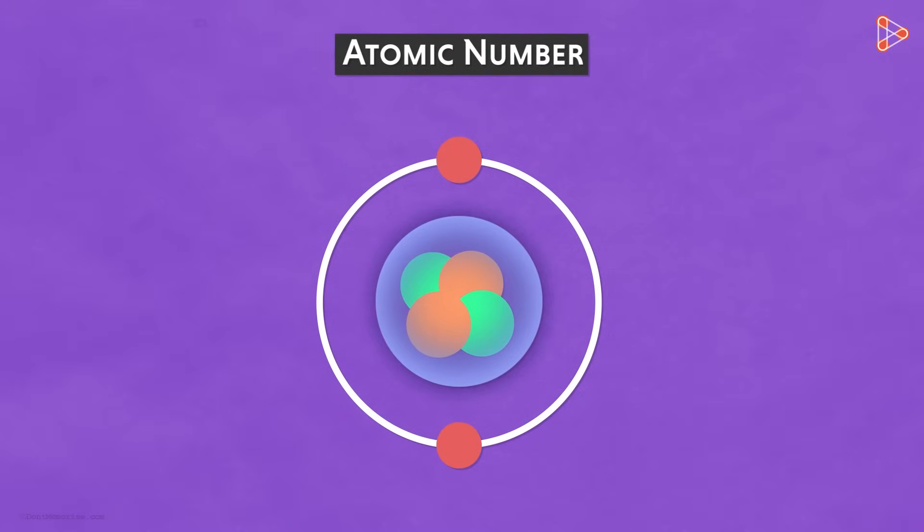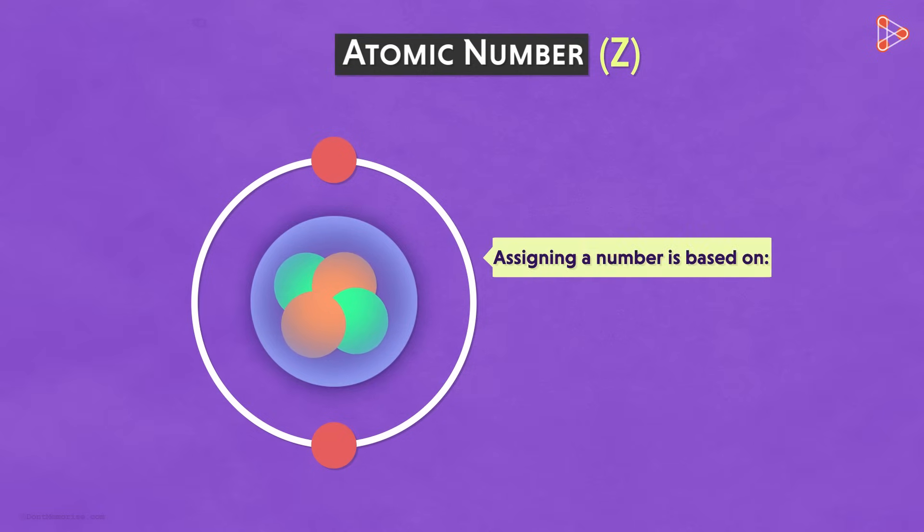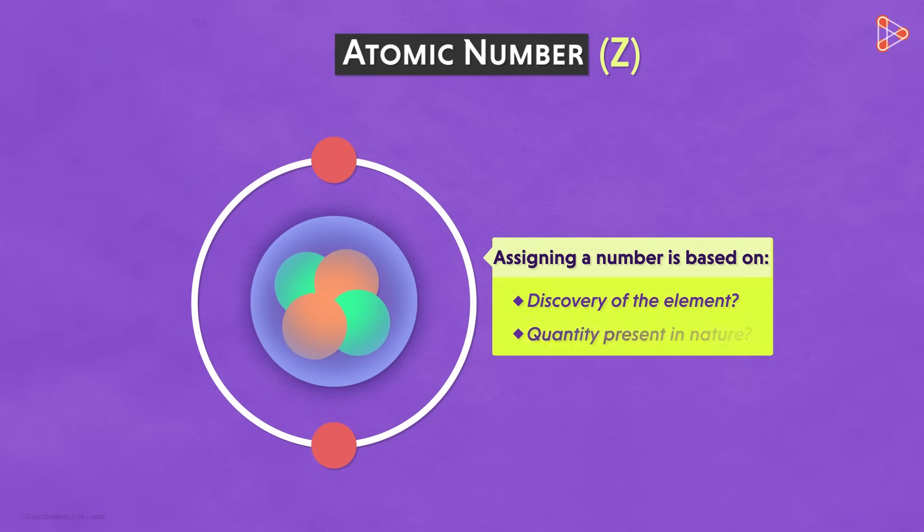Atomic number is denoted by the letter Z. As the name suggests, atomic number means the number assigned to a particular atom. Now I want you to think, on what basis should an atom be assigned a number? Should it be on the basis of when the atom was discovered? Or on the basis of how much quantity of the element is present in nature? What factor can be applied for numbering the atoms or the elements in general?